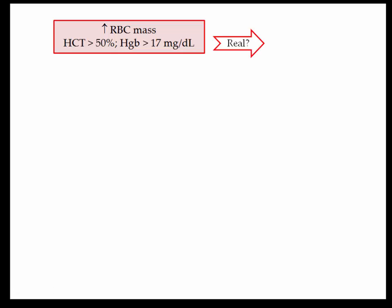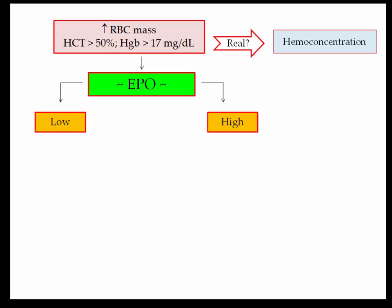The first step is to confirm that the elevation is real. Besides a spurious lab reading, what other situation can give a false positive result? Answer: hemoconcentration. We'll discuss the classic situation shortly. The next step in evaluating an elevated hematocrit is to obtain an erythropoietin level, abbreviated EPO. This is the key diagnostic step.